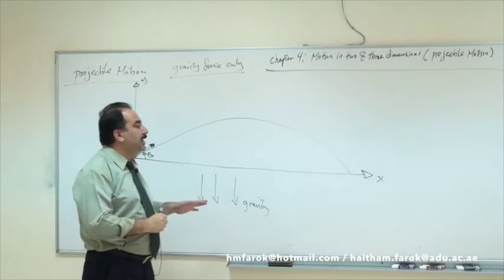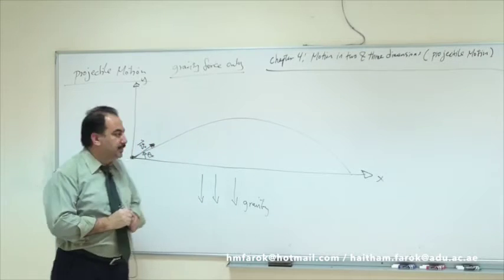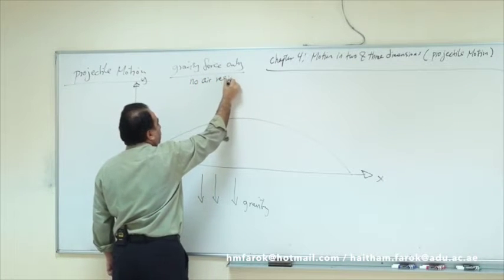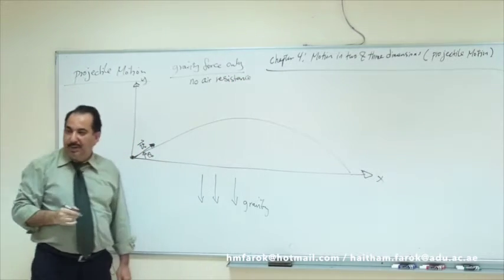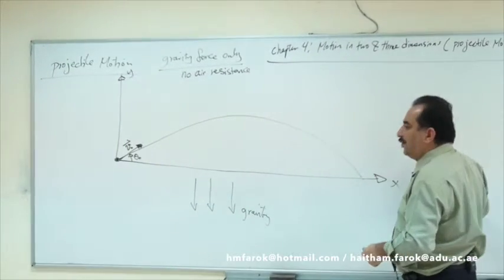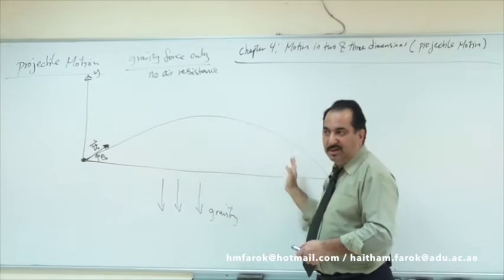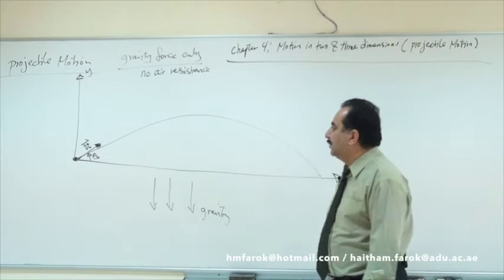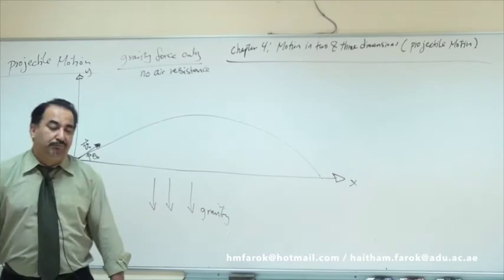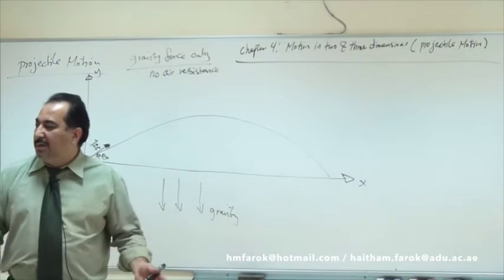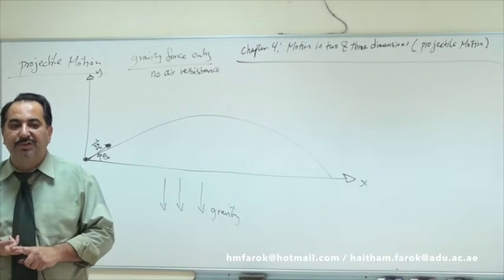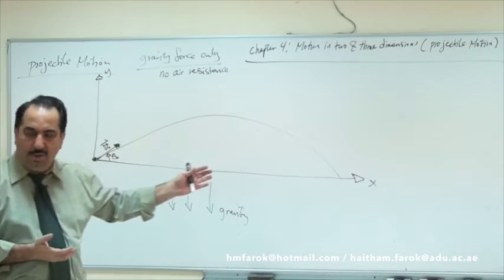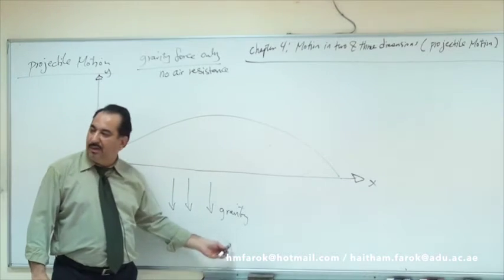When we say gravity force only, we mean there is no air resistance. Because if there is air resistance, you have the force of wind or air affecting the motion. So here we take the ideal situation — one force only, the force of gravity. Now, when you study motion, remember you talk about five things: initial velocity, final velocity, acceleration, displacement, and time. We want to measure these for an object moving in two dimensions under the influence of gravity.